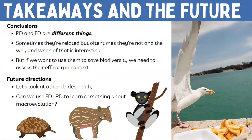My conclusions are: PD and FD are in fact different things. We might expect them to correlate, and they do under some circumstances, but there are many other factors washing out that signal. If we want to make these meaningful tools for conservation planners, we need to make sure they're actually doing something better than the current status quo. Future directions include applying this to other clades with large functional databases, and connecting this work to macroevolution.